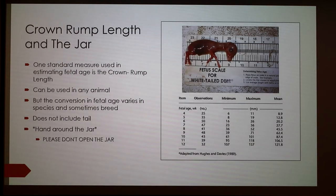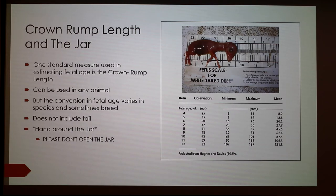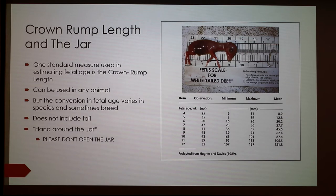So let's start out with crown rump length and the jar. One standard measure used in estimating fetal age is the crown rump length. It can be used in any animal, but the conversion to fetal age varies by species and sometimes breed. That brings me to this chart in the bottom right — I thought it was for a cat, but reading more, it's actually for a bovine, so it is not accurate for our purposes. But this is still how the chart would be set up.